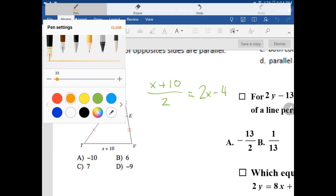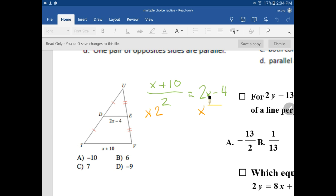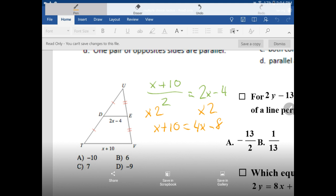Now, it looks a little bit confusing here because we can't actually divide x by 2. So what I'm going to do is I'm going to get rid of the divide by 2 by multiplying both sides of our equation by 2. That's going to leave us with x plus 10 on the left-hand side is equal to 4x minus 8.